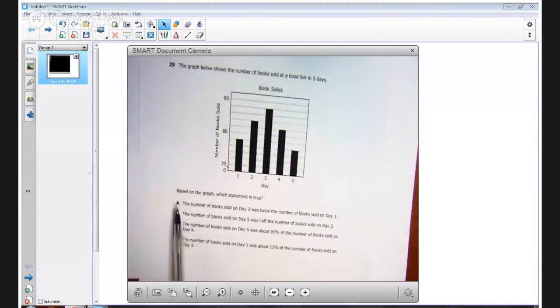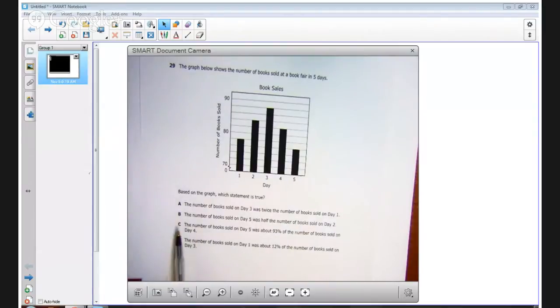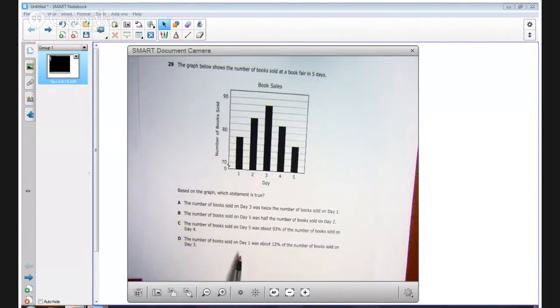Let's look at the answer choices. Based on the graph which statement is true. A: The number of books sold on day three was twice the number of books sold on day one. B: The number of books sold on day five was half the number of books sold on day two. C: The number of books sold on day five was about 93% of the number of books sold on day four. And D: The number of books sold on day one was about 12% of the number of books sold on day three.